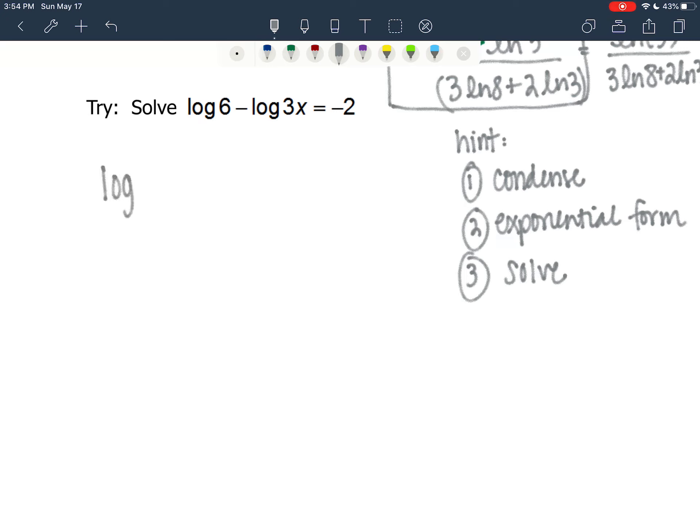Okay, so I'm going to first condense by writing log of a fraction. 6 goes in the numerator, 3x goes in the denominator equals negative 2.